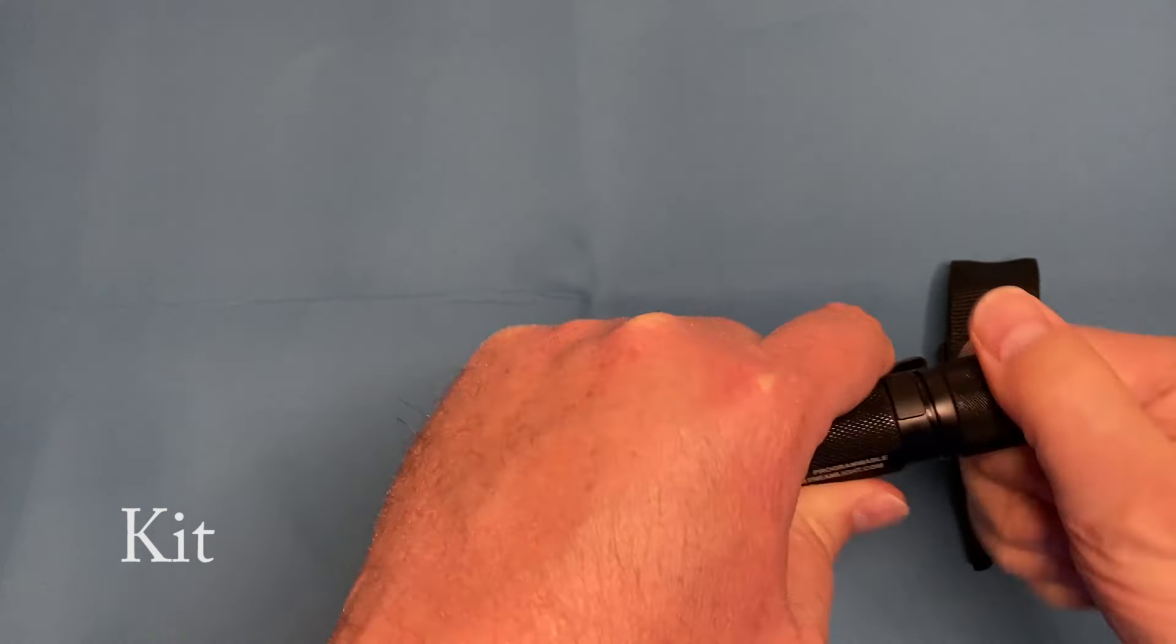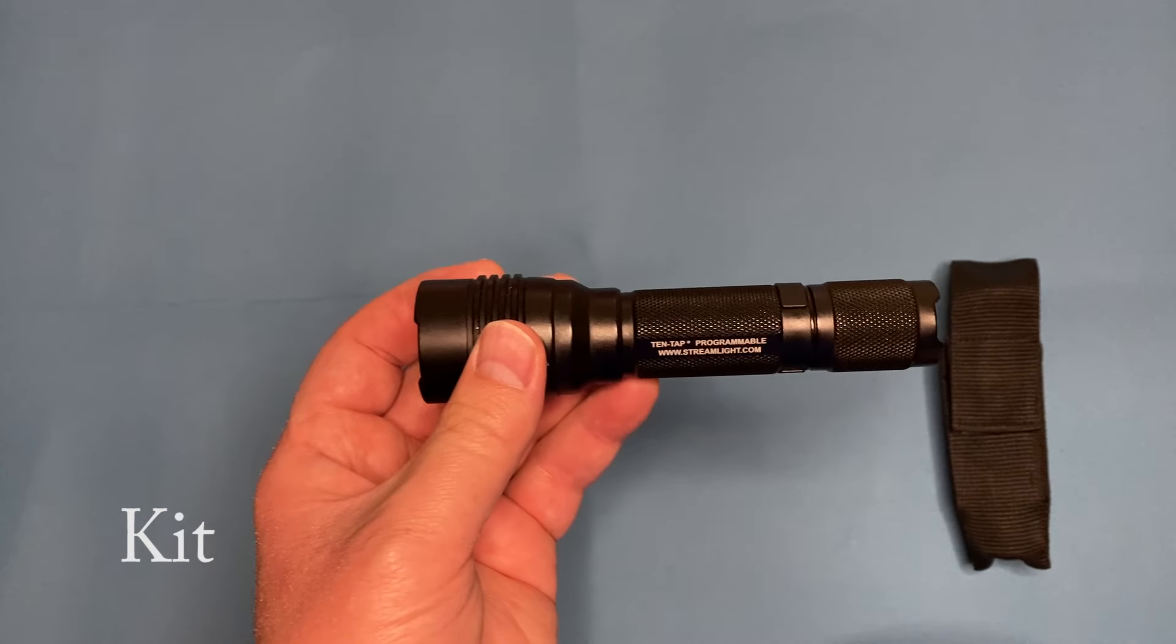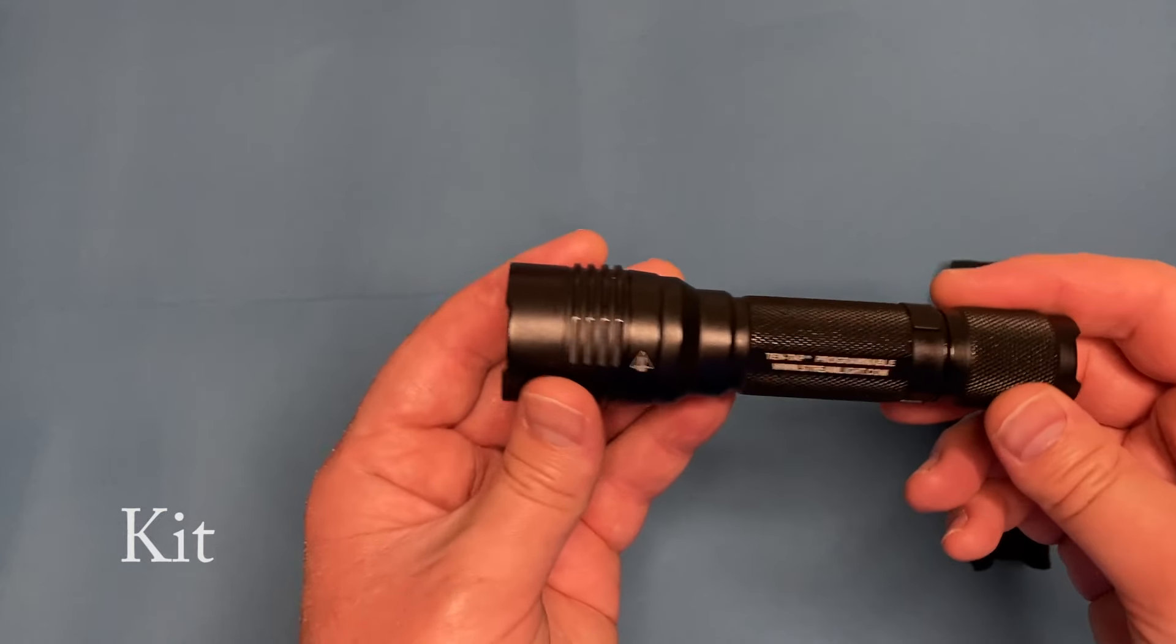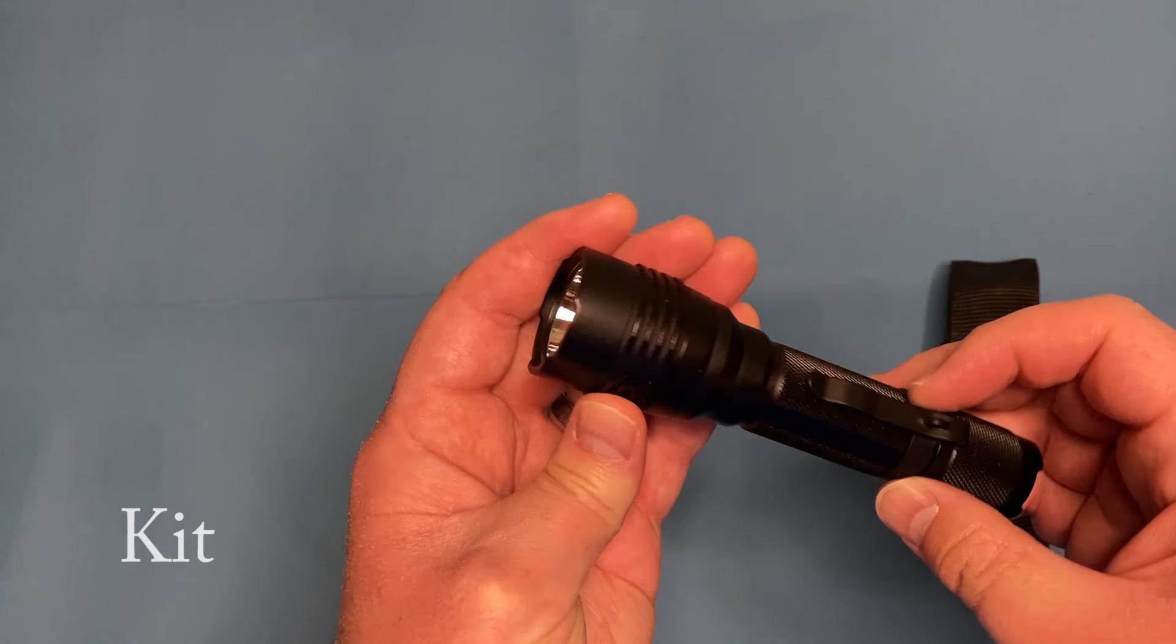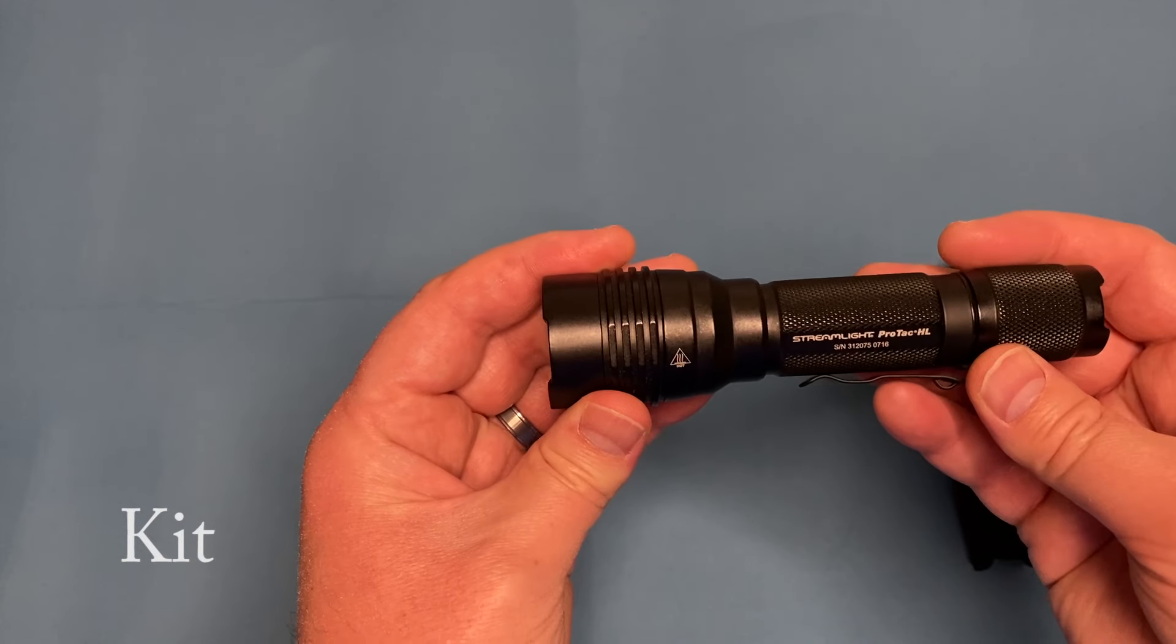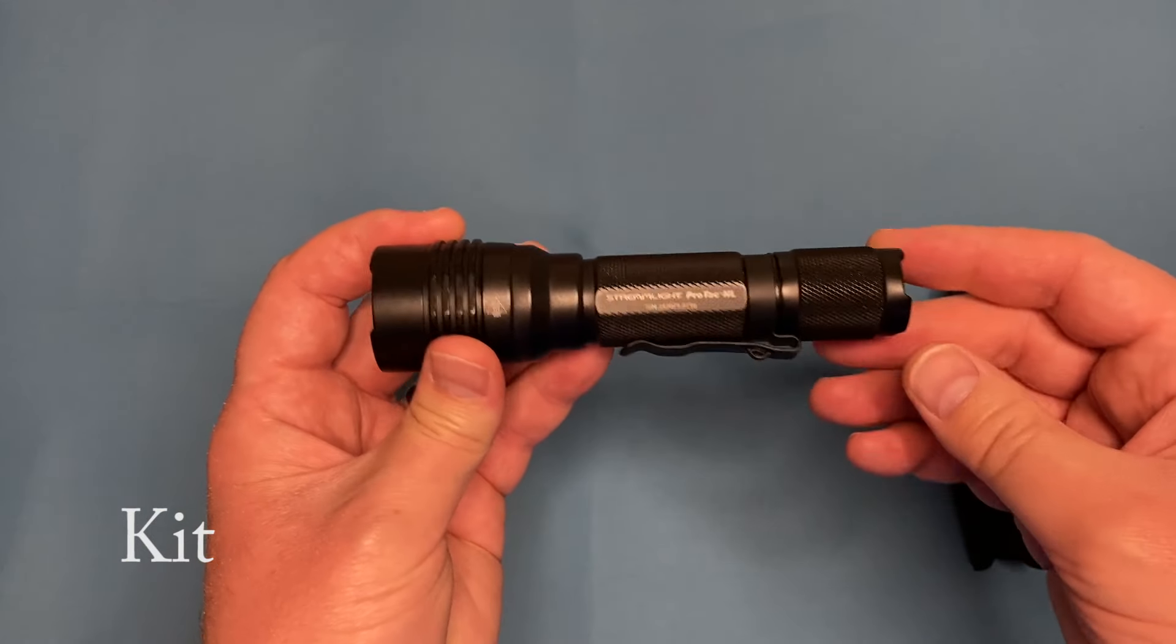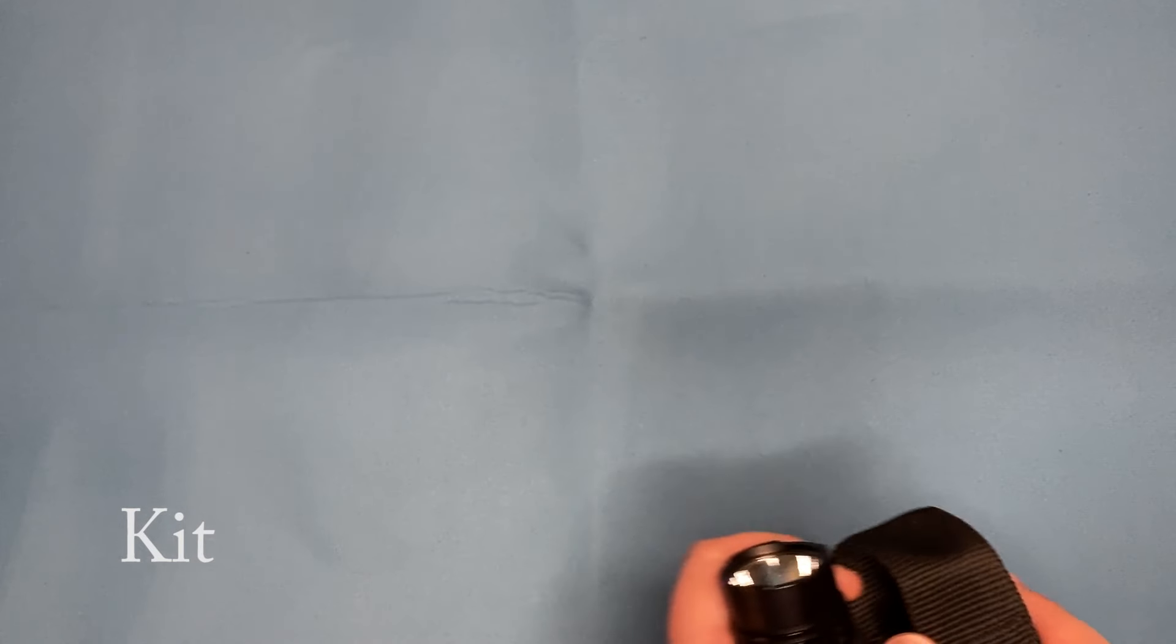And this thing is built like a tank. I really like Streamlight. I know there are other manufacturers out there, Olight and whatnot. But Streamlight has just been steadfast for me, and I'm not going to abandon them now. So that is my kit light. That's what goes in my go bag, my search and rescue bag, etc. and so forth.